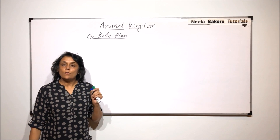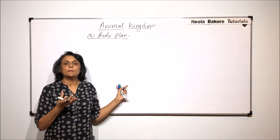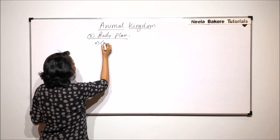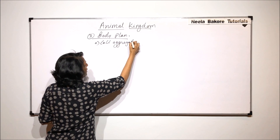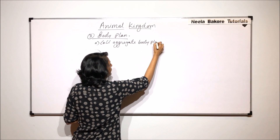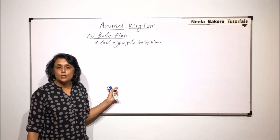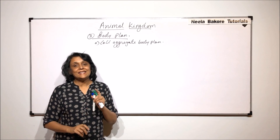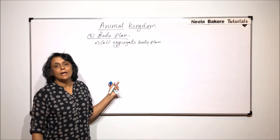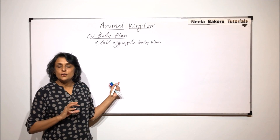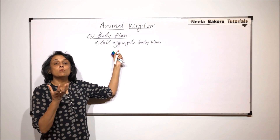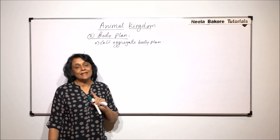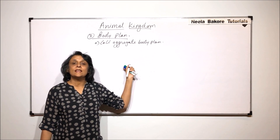Now, in case of body plan, we mean what exactly the body is made up of. We have three different categories of animals. One is known as the cell aggregate body plan. This is nothing but cellular level of organization. The organism is a multicellular animal, but each cell is working independently and performs all its activities on its own. There is no coordination between different cells.